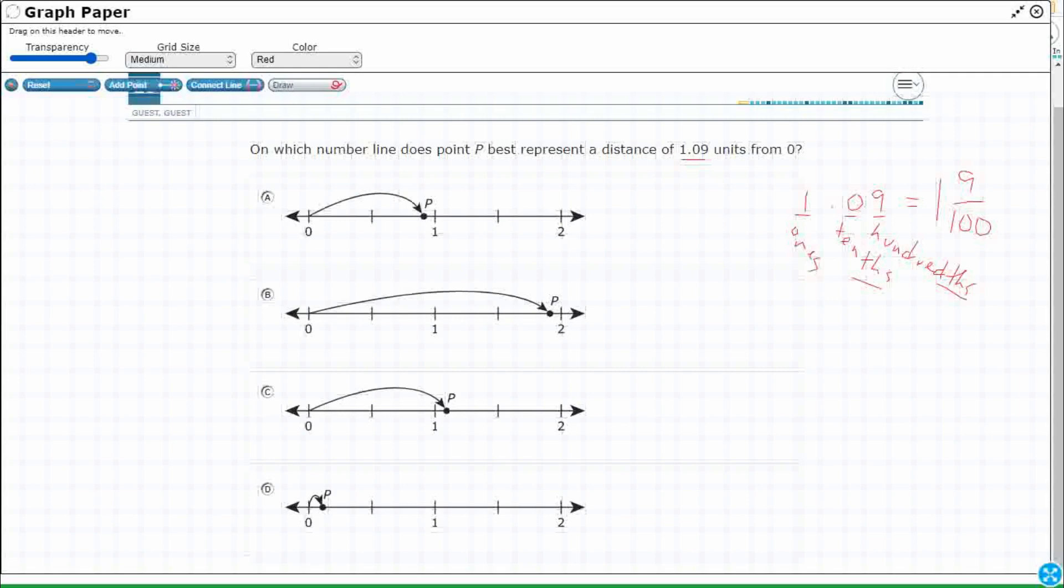If I take these 9 hundredths away, I'm back down at 1. So if you were to imagine like between 1 and 2, and if you were to imagine 100 tiny little marks. So I'm not going to count, but I'm just going to pretend that I drew 100 marks. I didn't even get 100 marks, right?